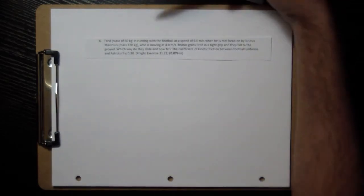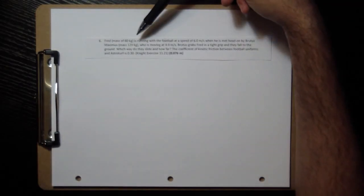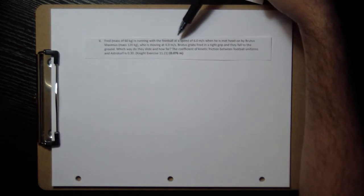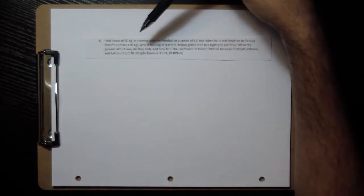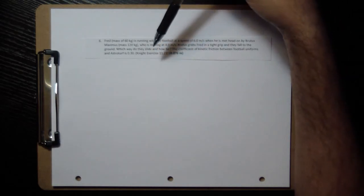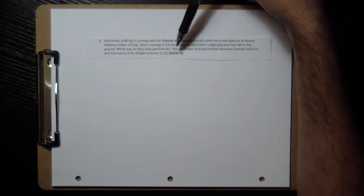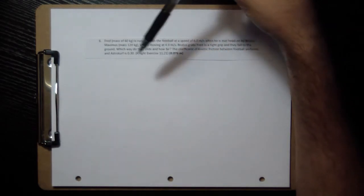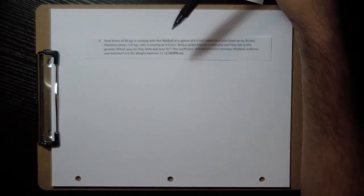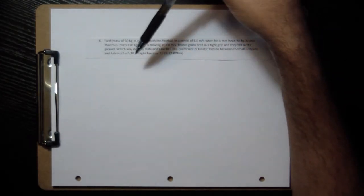Let's look at problem number six. Fred, with a mass of 60 kilograms, is running with the football at a speed of 6 meters per second when he is met head-on by Brutus Maximus with a mass of 120 kilograms, who is moving at 4 meters per second. Brutus grabs Fred in a tight grip and they fall to the ground. Which way do they slide and how far? The coefficient of kinetic friction between football uniforms and AstroTurf is 0.3.